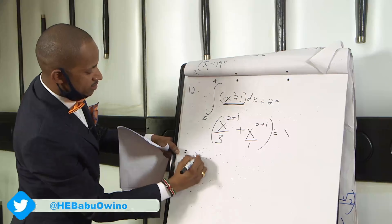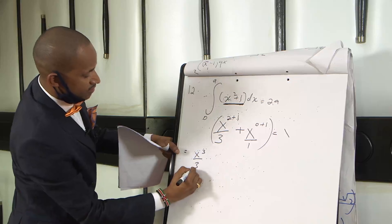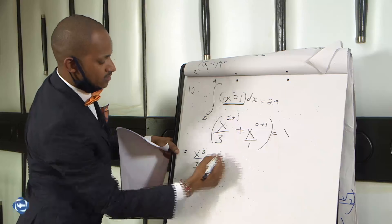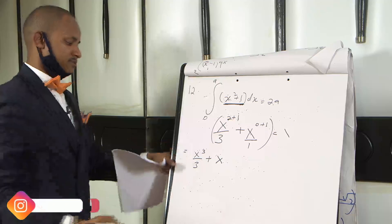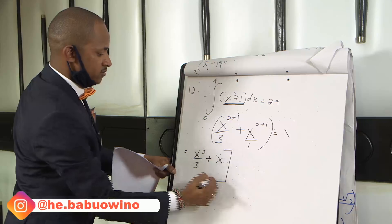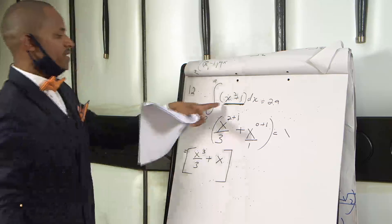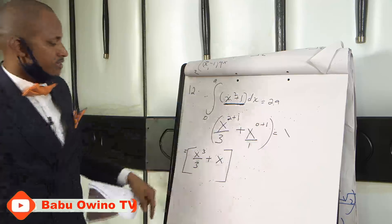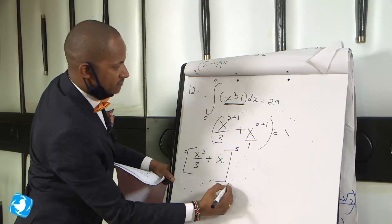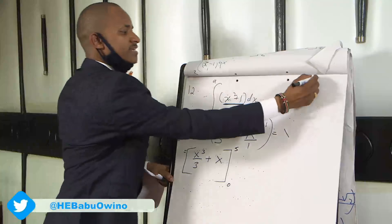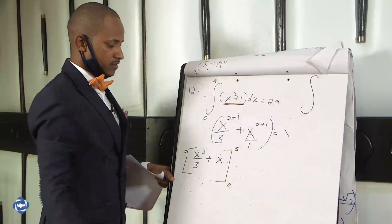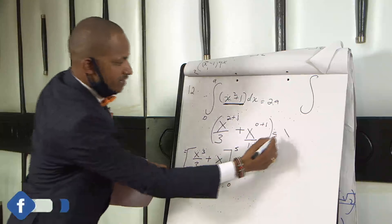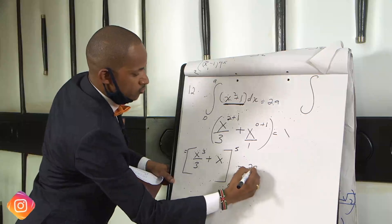What do we get here? This is x cubed divided by 3 plus x raised to power 1. 0 plus 1 is 1. x raised to power 1 is just x. So these values, after integrating, you don't write the dx, you just replace it with the limits of A and 0. And again, you don't write the integral sign because you've already integrated it. So this value equals to 2A.